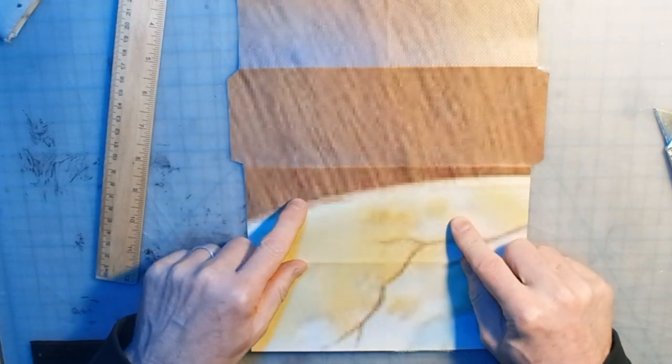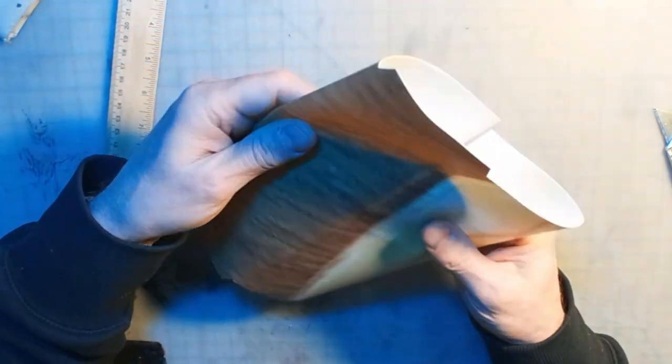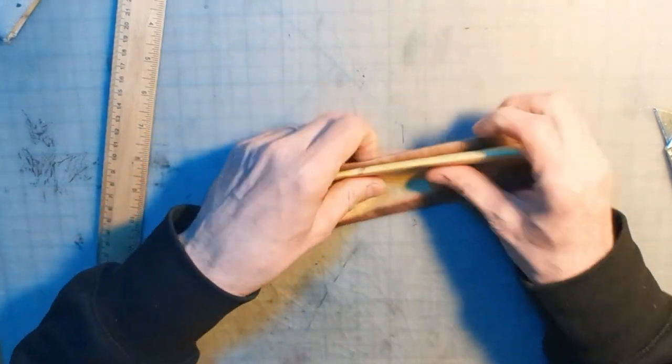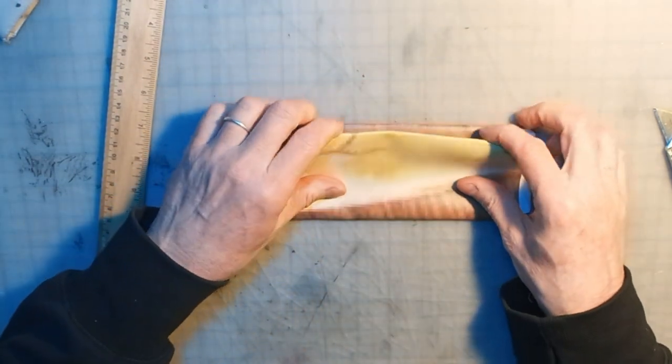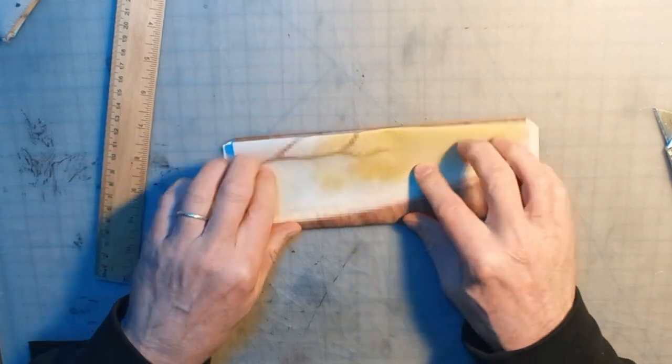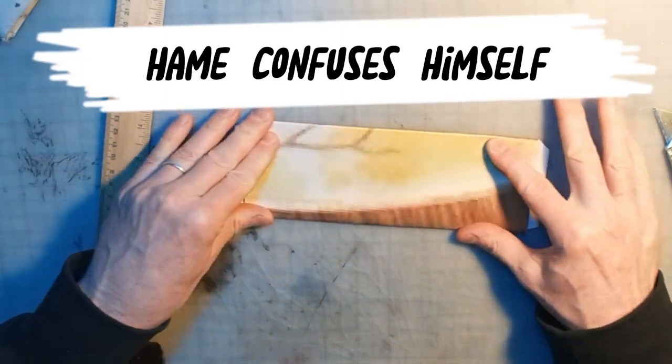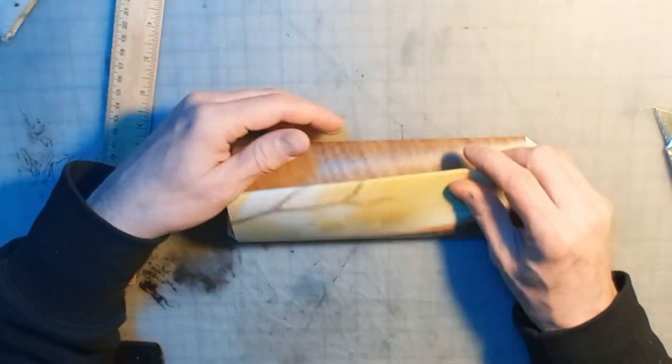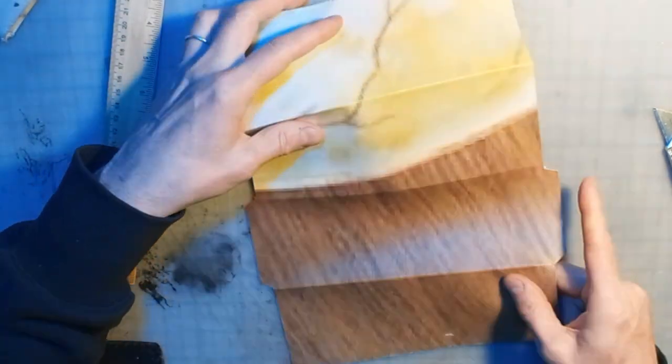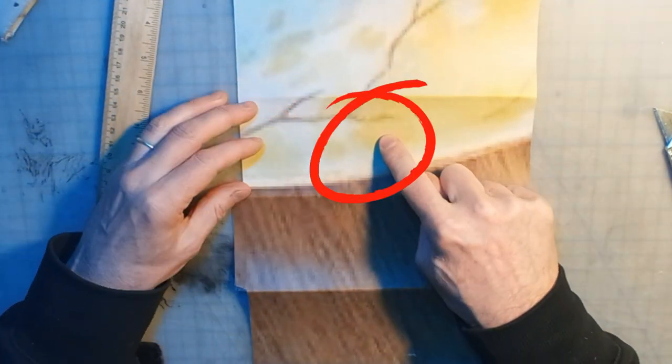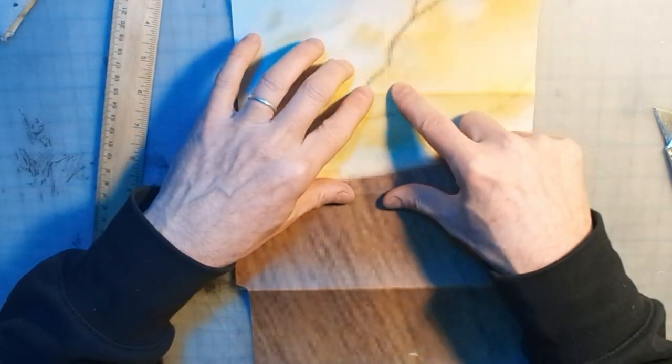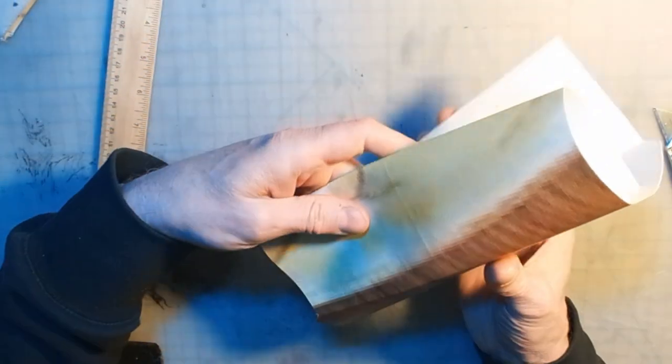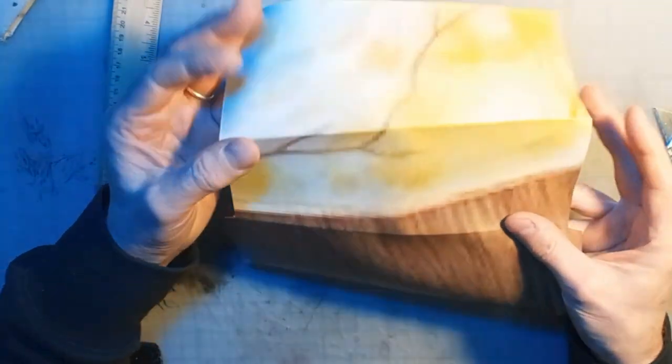So I'll flip this over. And so again, just keep folding it and checking in. I want it in this panel because that will be in the middle of the wallet.